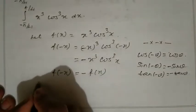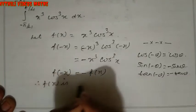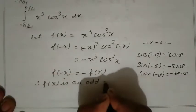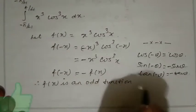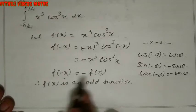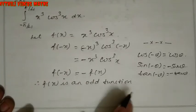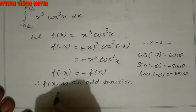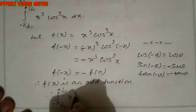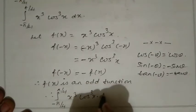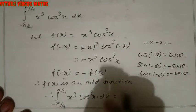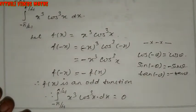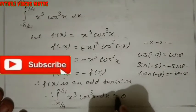Therefore f(x) is an odd function, since f(minus x) equals minus f(x). So by the property for odd functions, the integration from minus π/4 to plus π/4 of x³ cos³x dx equals 0.